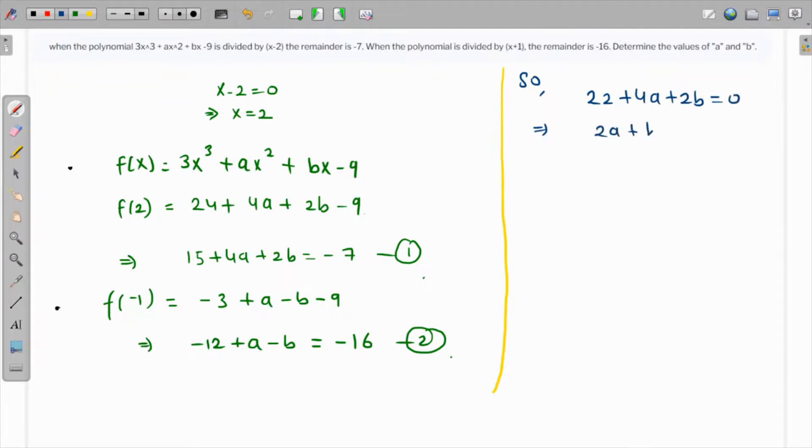2a + b + 11 = 0. Let's call it equation 3. Likewise, adding 16 to both sides of equation 2: 4 + a - b = 0. Let's call it equation 4.